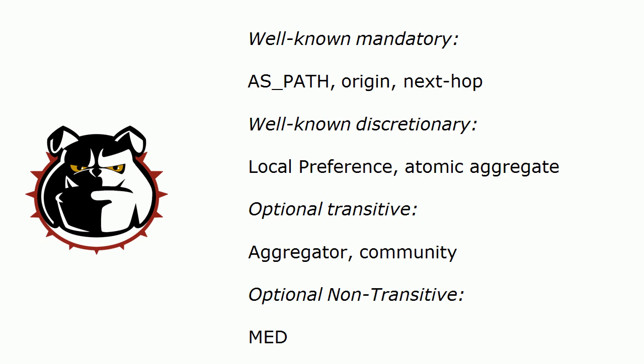Your well-known mandatory attributes — and I would know these like the back of my hand — are AS Path, Origin, and Next Hop. Your well-known discretionary attributes are Local Preference and Atomic Aggregate. Your optional transitive attributes — not easy to say — are Aggregator and Community. And then finally, our optional non-transitive BGP attribute is MED.